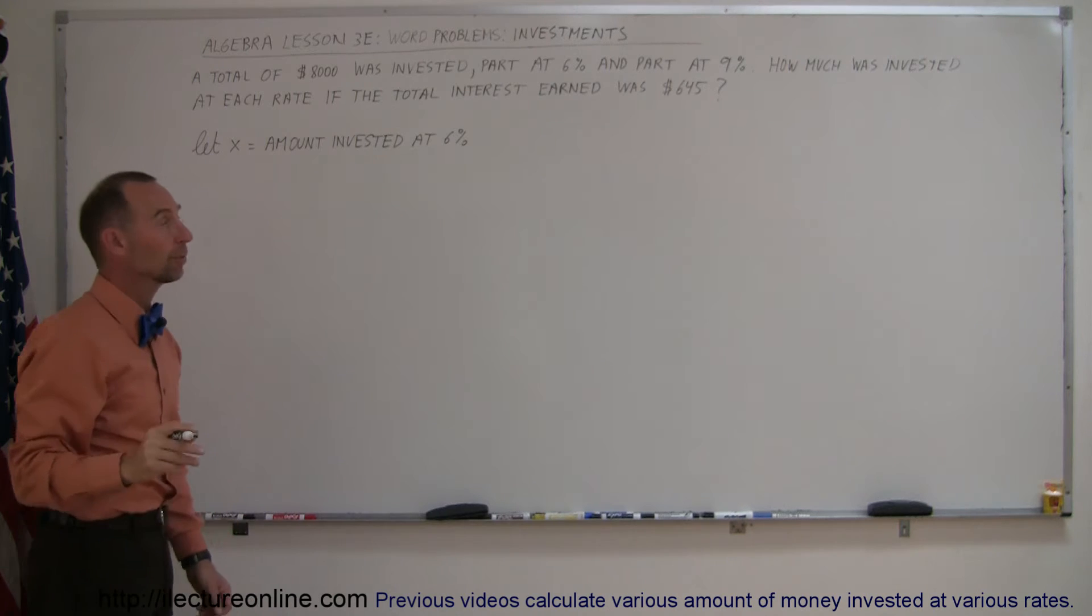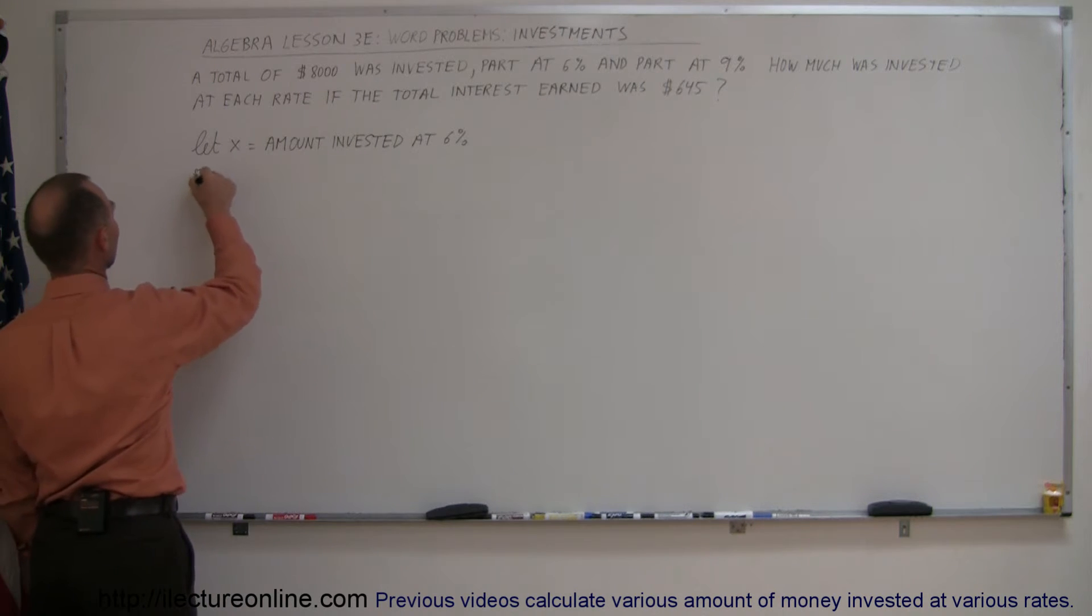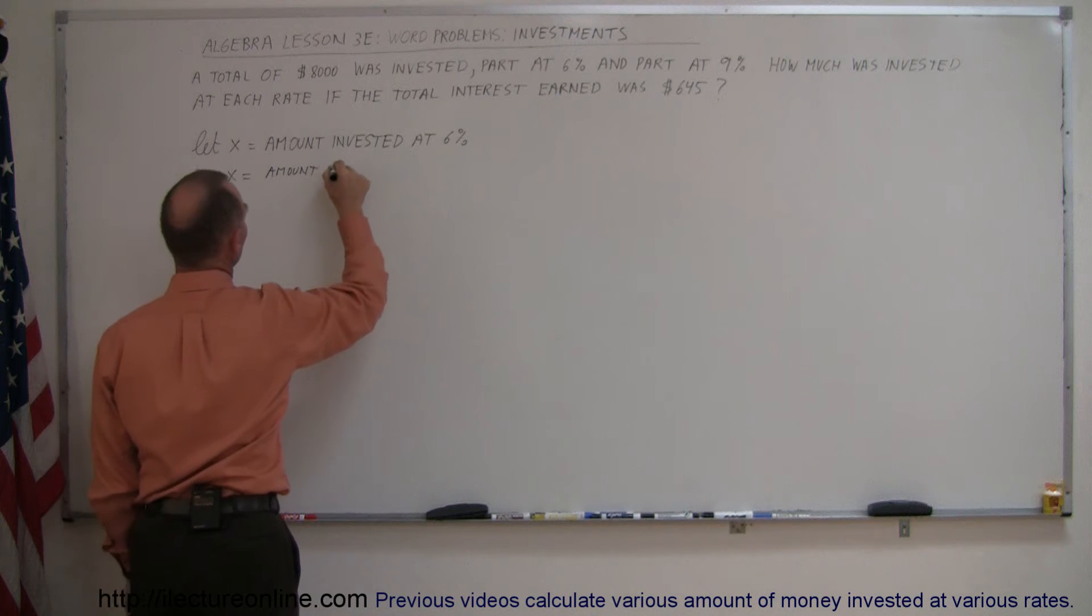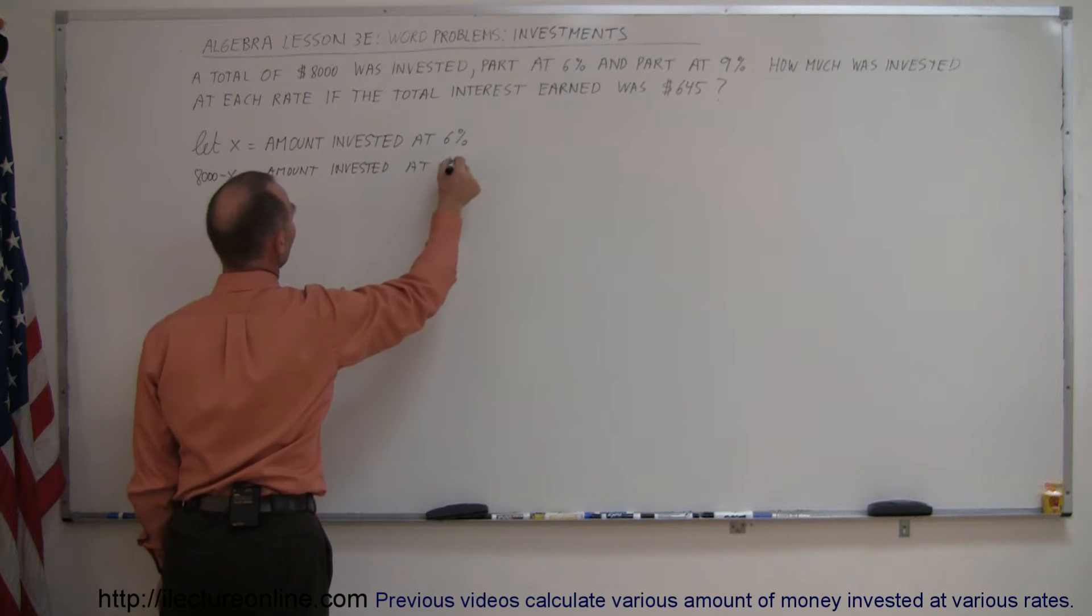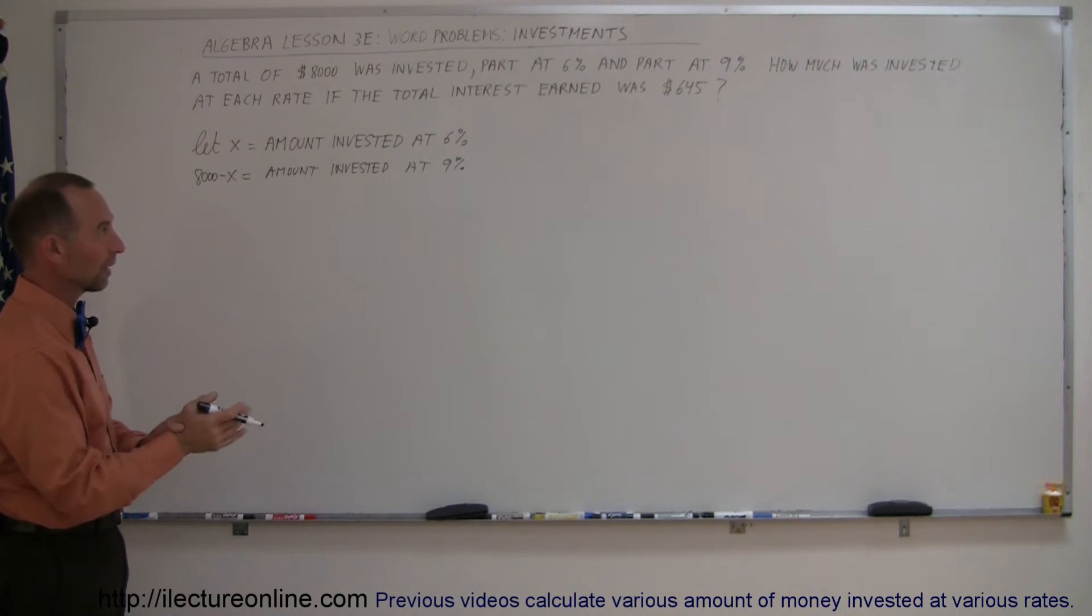That means the remainder, the leftover of the 8,000, so 8,000 minus X is the amount invested at 9%, and since they tell us what the total amount of money earned was, $645.